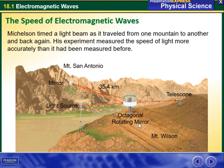So I have here an octagonal rotating mirror and a mirror on the other side of the mountain. Then I have a light source and a telescope, and the distance is 35.4 kilometers apart.